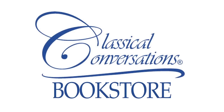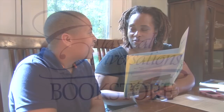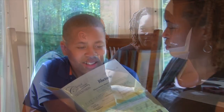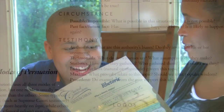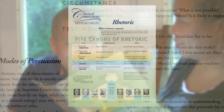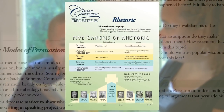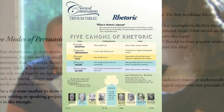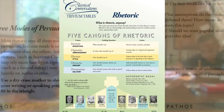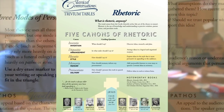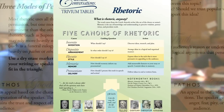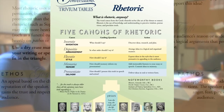Does your student struggle when writing a paper or giving a presentation? Have you ever wondered how you can help them become a better thinker? A new tool called the Rhetoric Trivium Tables is now available from Classical Conversations to help your student think deeper about the process of expressing ideas.